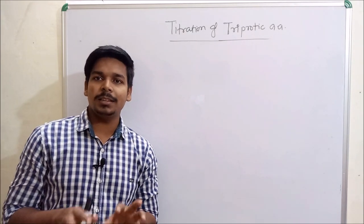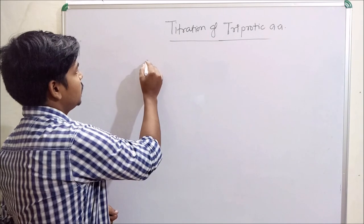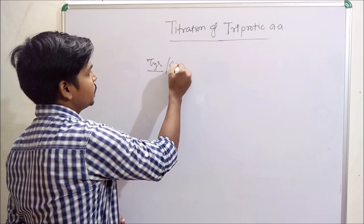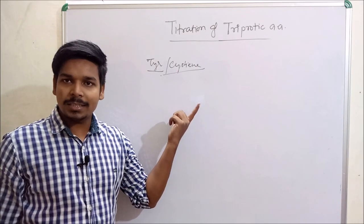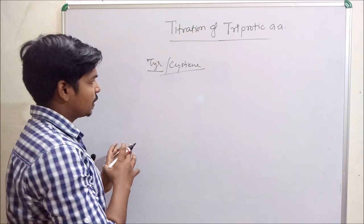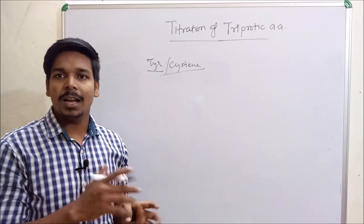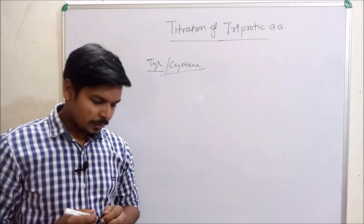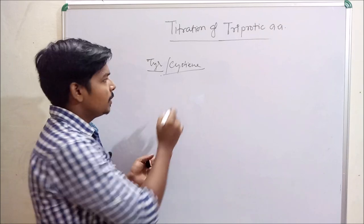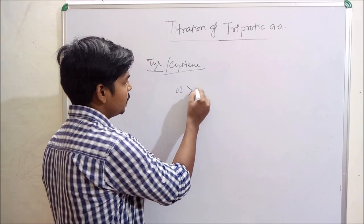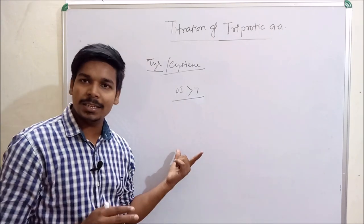The next case includes histidine, and one more amino acid — tyrosine. The case of cysteine and tyrosine is similar to arginine and lysine. The titration characteristics of tyrosine and cysteine are similar to arginine and lysine, so the pI value for tyrosine and cysteine must be greater than 7, because they show characteristics similar to arginine and lysine.